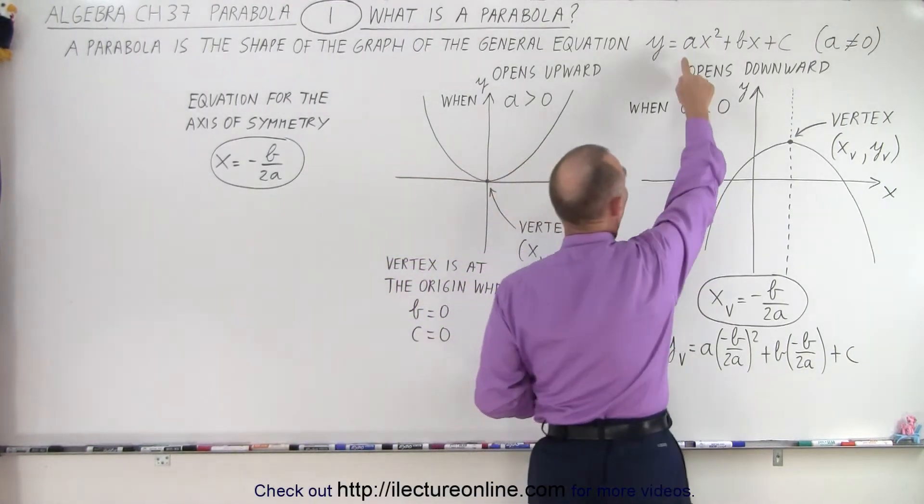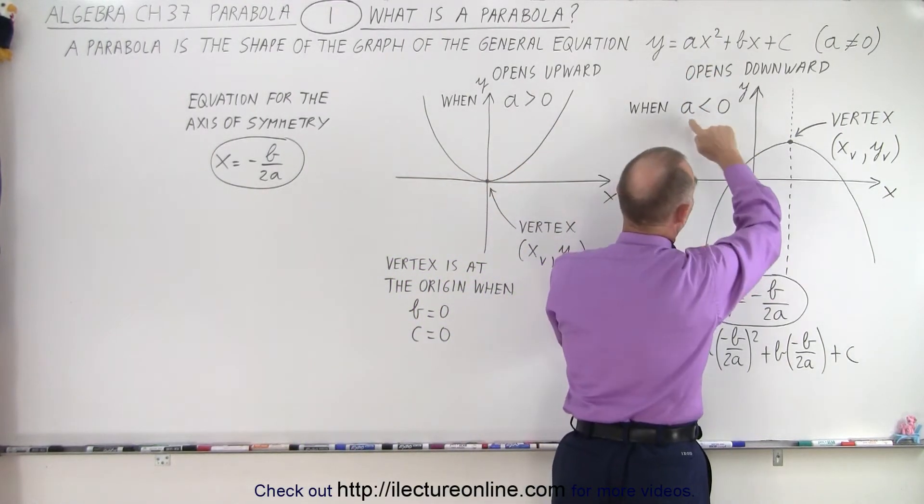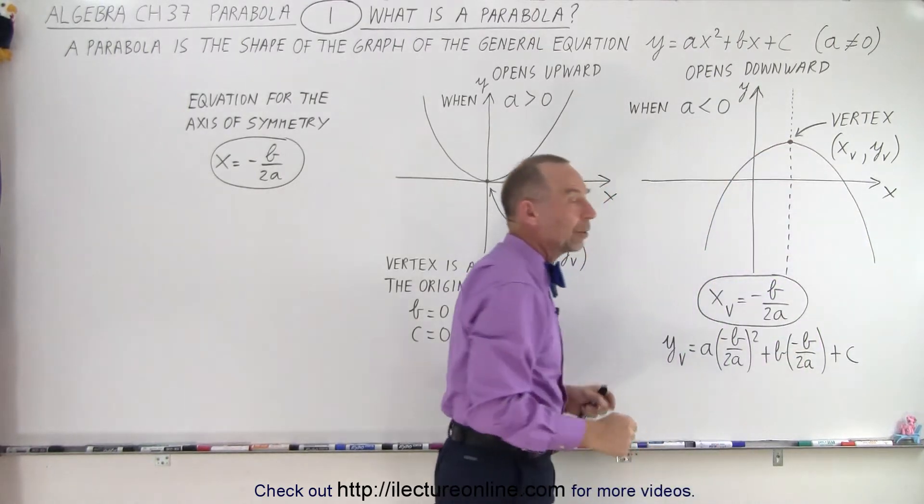When the coefficient in front of the x squared term is negative, when a is less than zero, the parabola opens downward.